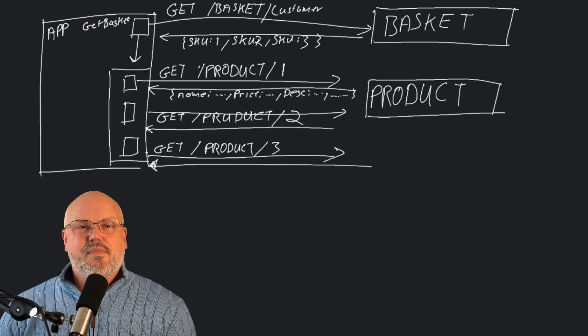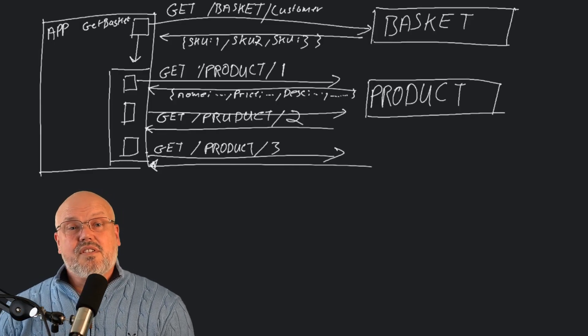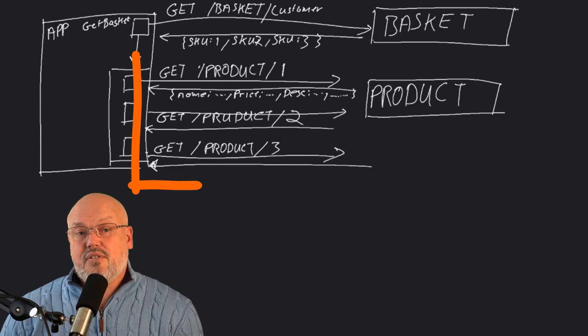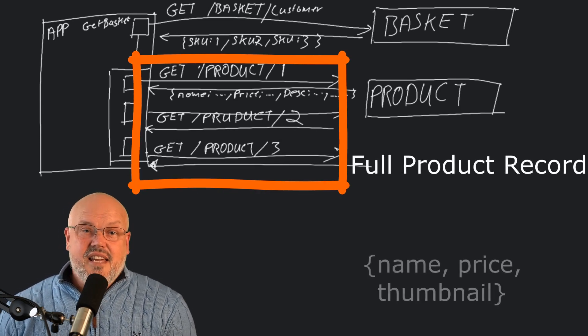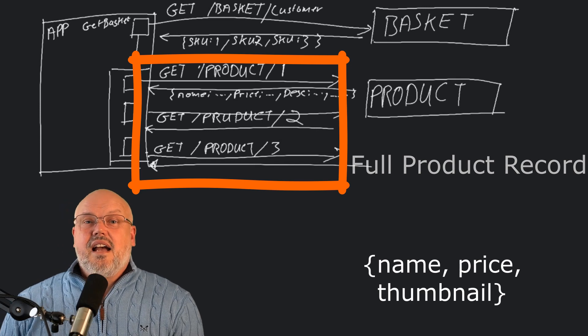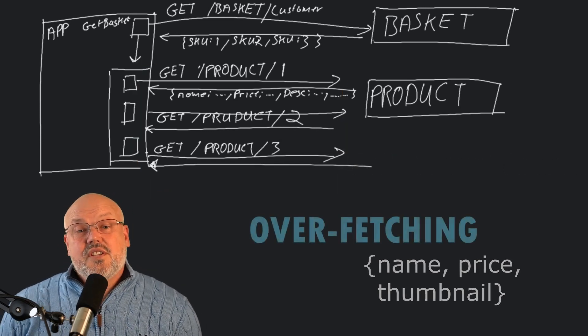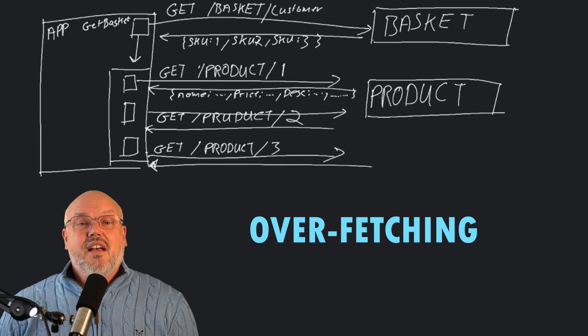Another issue is that REST API calls are designed to give you a complete set of data, which may be more than you actually need. Taking the example of a customer's basket calling the product service, you'll get the entire product record when all you really need is its name, price, and thumbnail. This issue is called overfetching, because you're getting more data than you need from every single request. For a more detailed description and example of this, you should take a look at the other video — What is GraphQL?